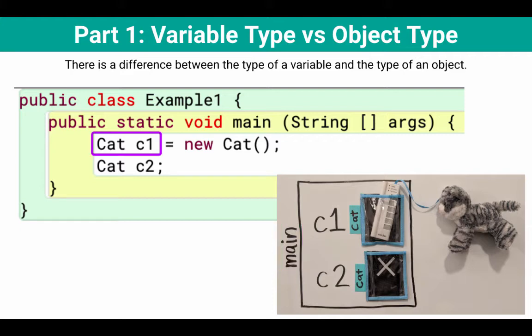So when I execute this line, the full line says cat c1 equals, or sometimes we say gets a new cat. What actually happens is I make the variable, and then I call the constructor, I make that new cat object, and then I do the assignment statement. So let's see how that maps to our figure.